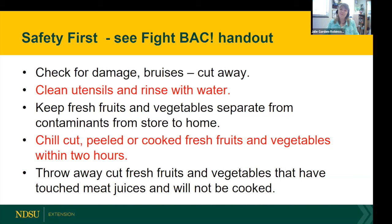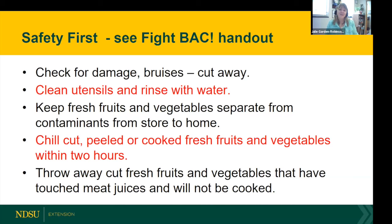Keep fruits and vegetables separate from any contaminants — that could be raw meat juices or other items — all the way from your grocery cart to your home. Once you cut up fruits and vegetables, they become perishable. The USDA recommends a two-hour timeline: keep fresh produce that's been cut, peeled, or cooked out for no more than two hours. Serve it, then get it into a shallow container in the fridge. If fresh fruits or vegetables have touched meat juices and will not be cooked, you need to either cook them or toss them — you can kill microorganisms through cooking, but you don't want to consume raw meat juices.